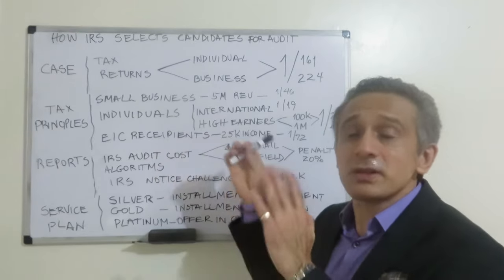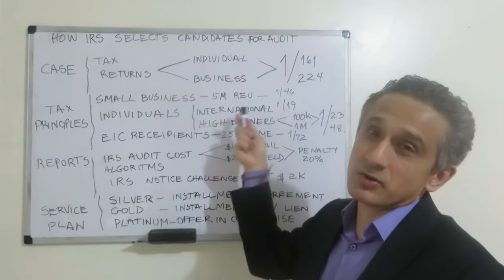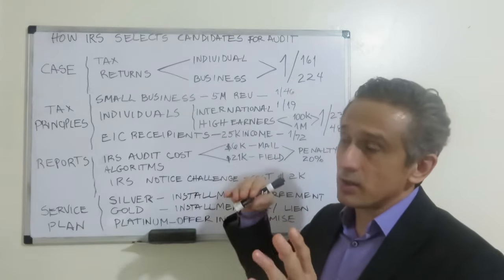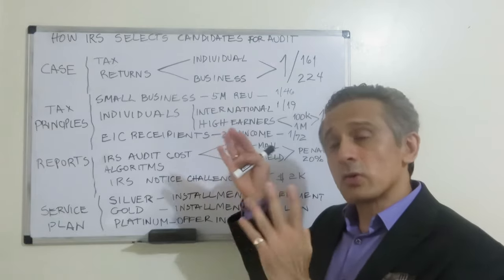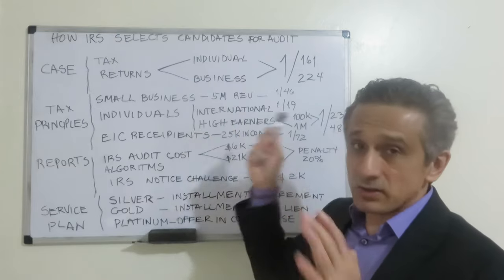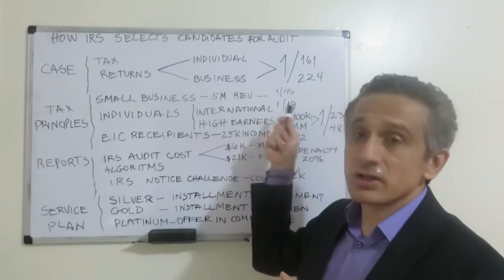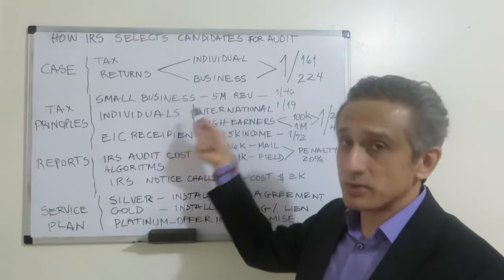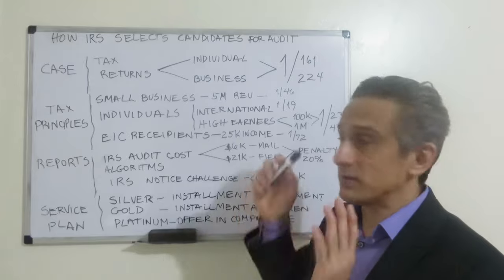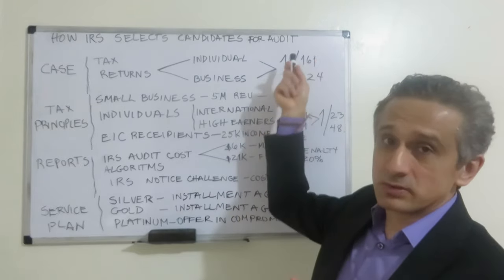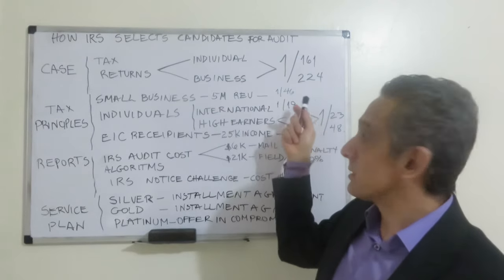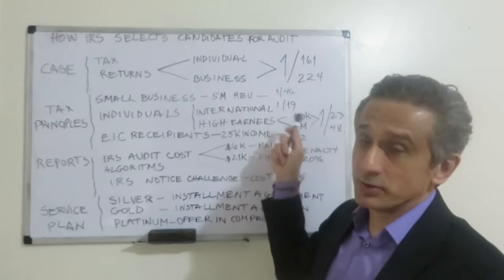For individuals, there are two classifications: people with international or foreign income, and high earners — meaning people who make either $100,000 or $1 million. The most-audited portion is international individuals: out of every 19, one will be audited. Compare that to general individuals, where it's 1 in 161 — for international income it's 1 in 19.